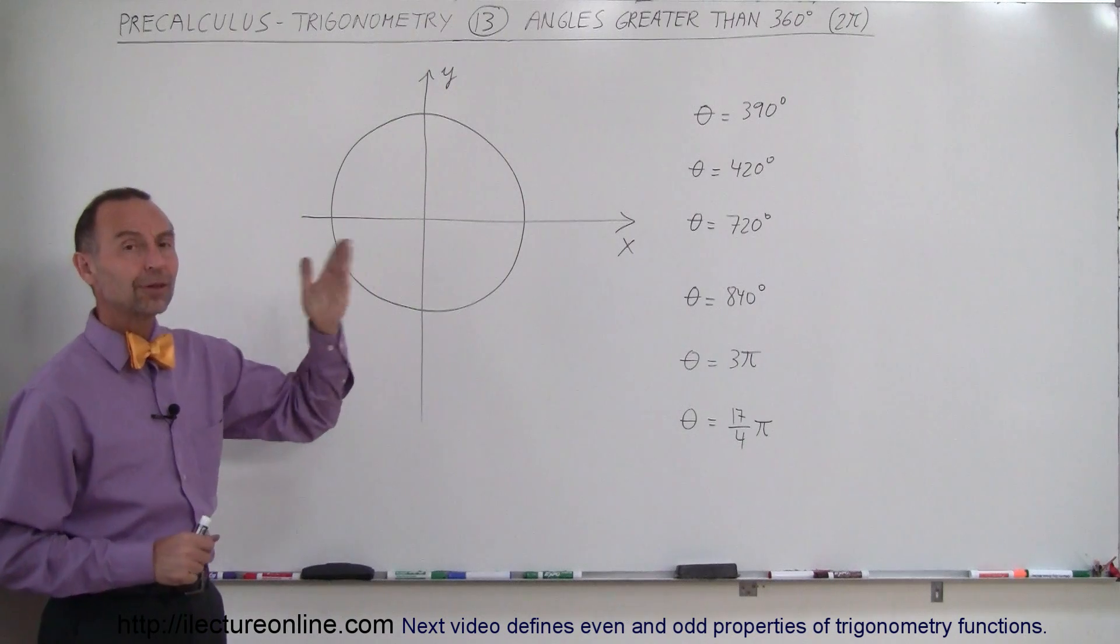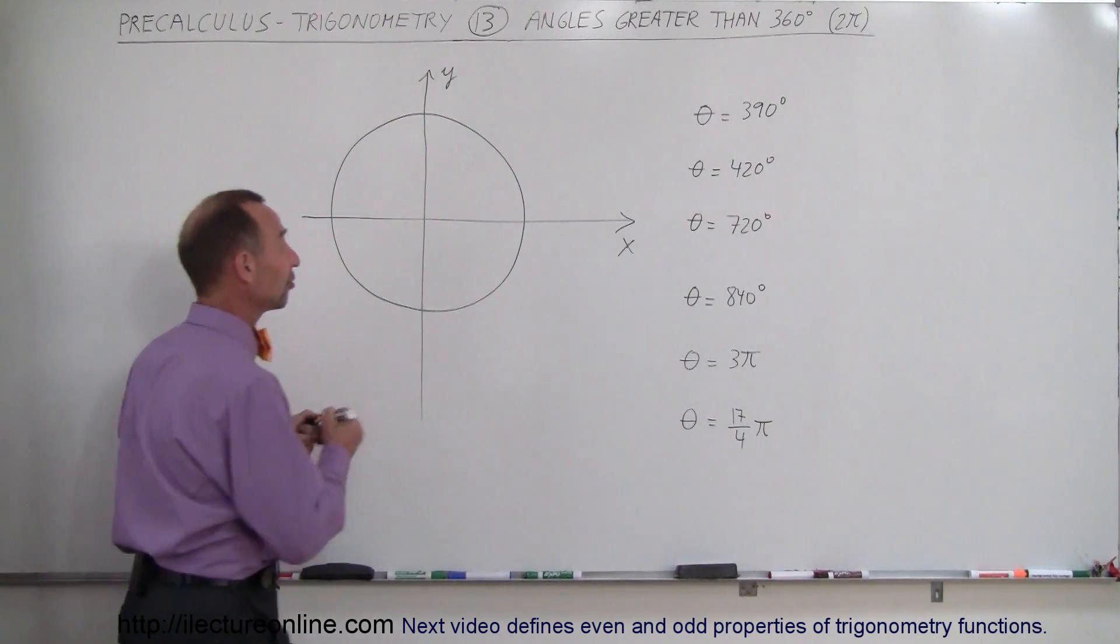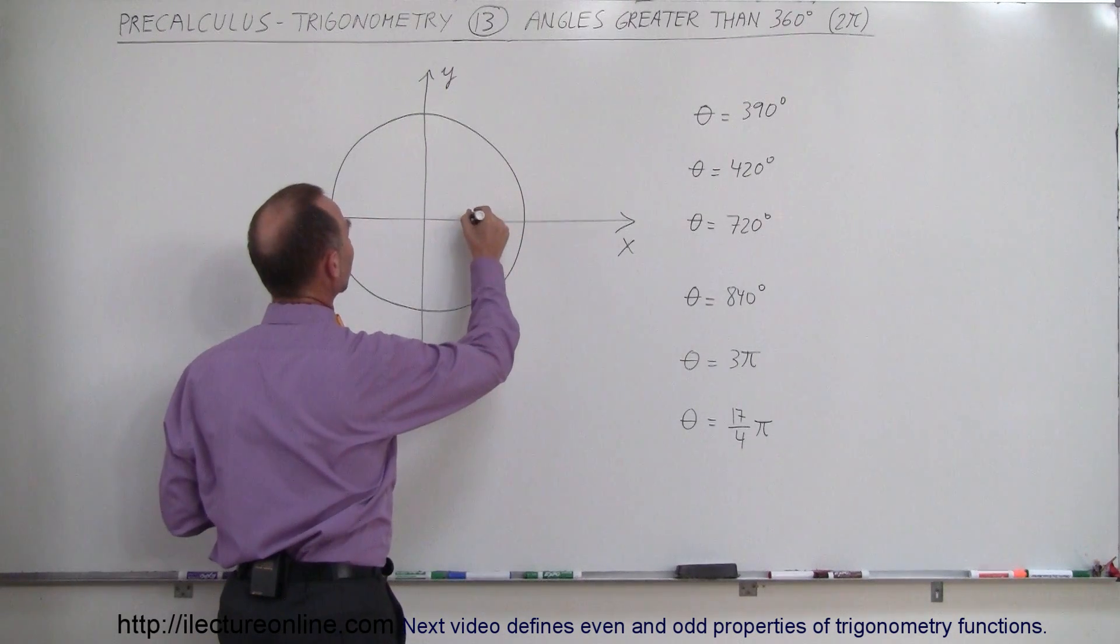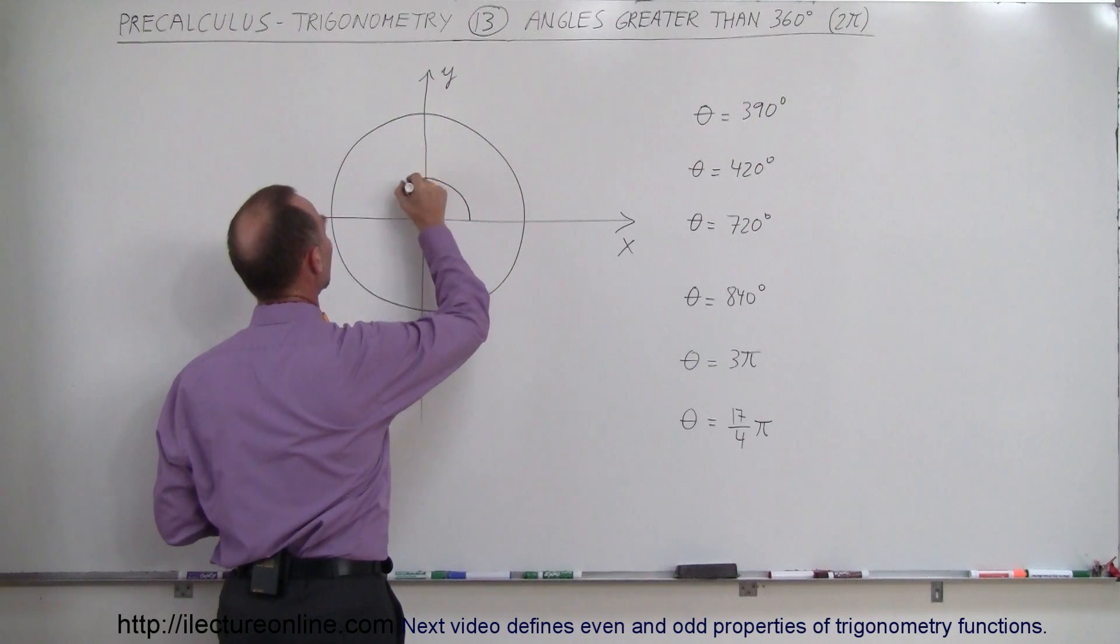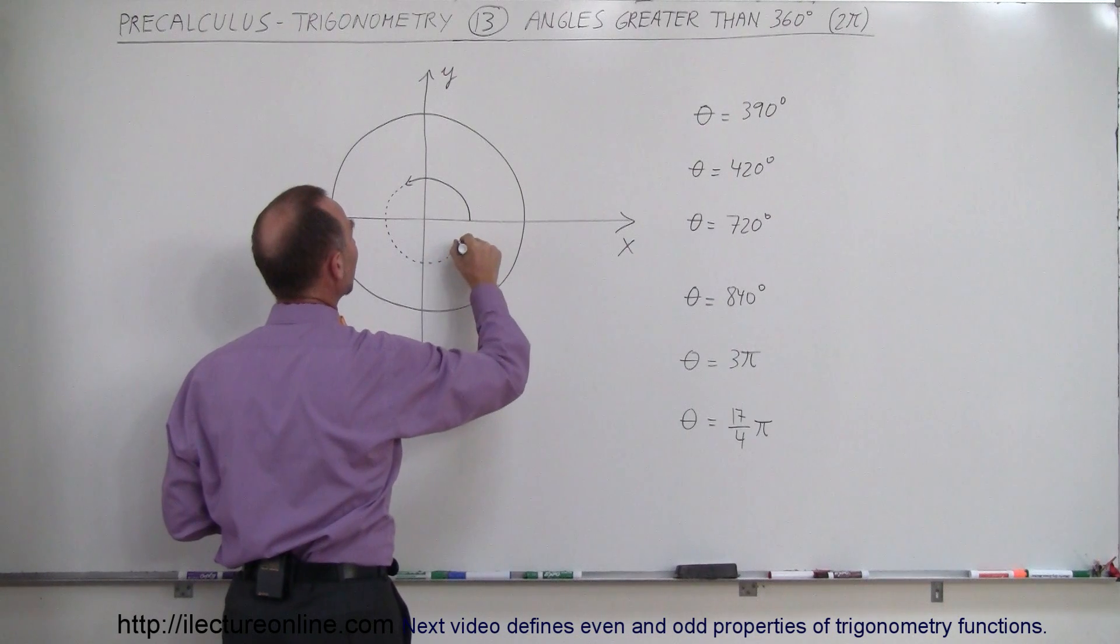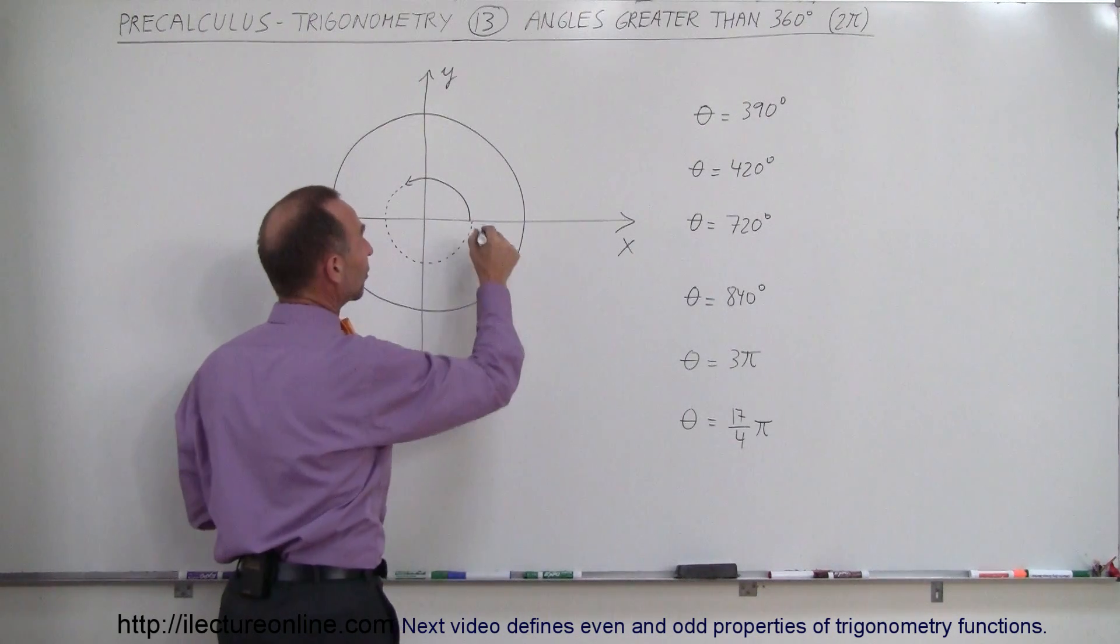Well, let's say we have an angle of 390 degrees. We always start from the x-axis and travel in a counterclockwise direction. So 390 degrees means we keep going, we keep going, we keep going until we reach an angle of 360. That's still not quite there.